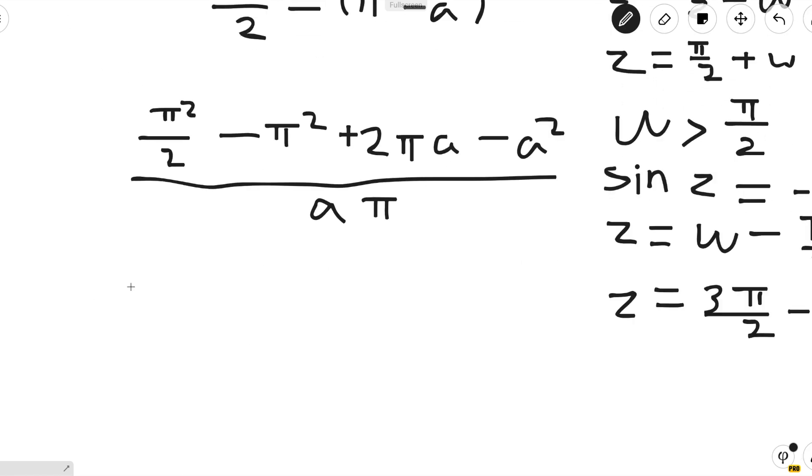So this equals -π²/2a + 2 - a/π. Or this equals 2 - (a/π + π/2a).